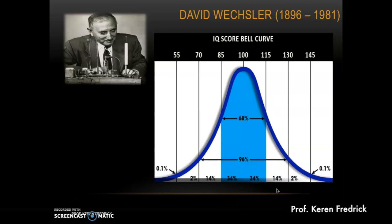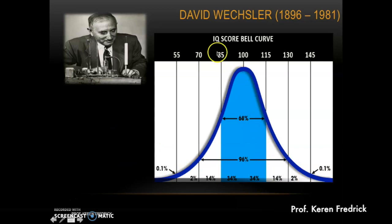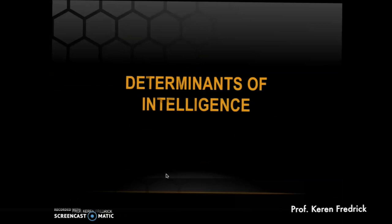Wechsler's IQ scores are represented on a normal curve. Most scores fall in the middle range, representing average scorers, with very few at the extremes. In terms of intelligence, the average range is 85 to 115. Approximately 0.1% of individuals score at the extreme high end, and 0.1% show extreme deficits at the other end.